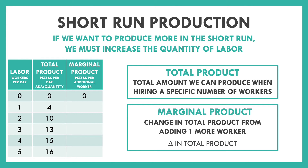When we hire our first worker, going from zero to one worker, the change in total product — that little triangle is a Delta, meaning change — is 4 pizzas (from 0 up to 4). Going from one to two workers, we go from 4 pizzas up to 10, so that's 6 more pizzas. From two to three workers, we go from 10 to 13, so 3 more pizzas. Then from three to four workers, 13 up to 15, that's 2 more pizzas. And only 1 more pizza when we hire the fifth worker.